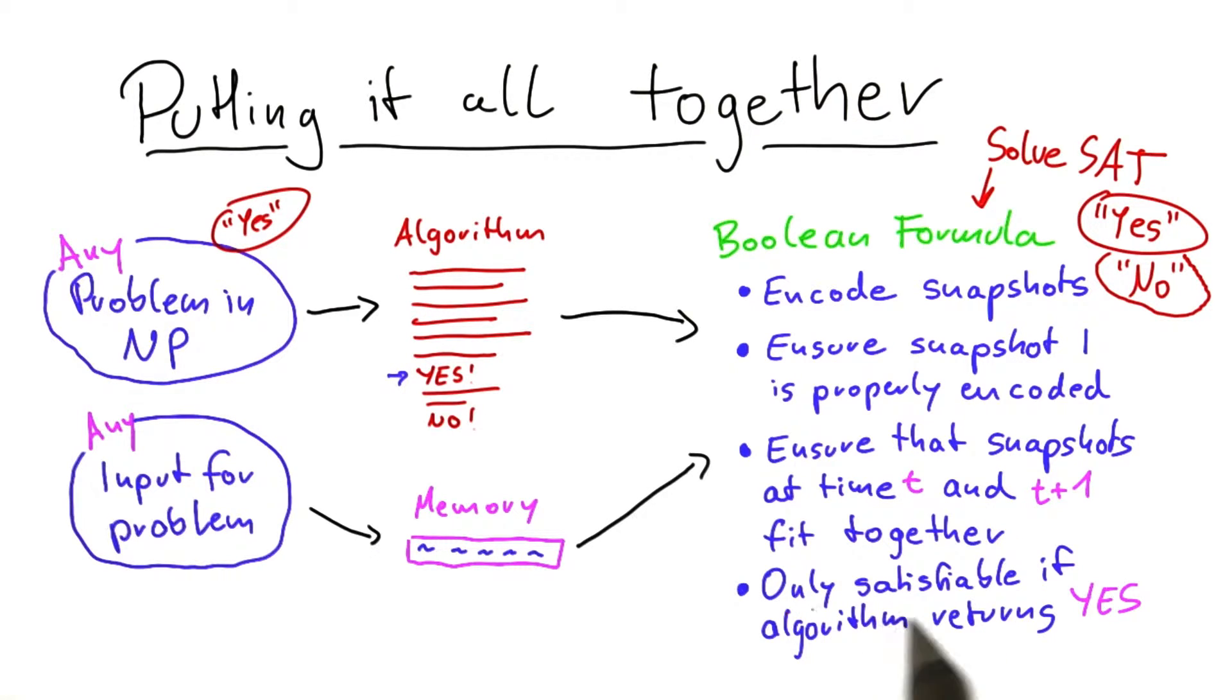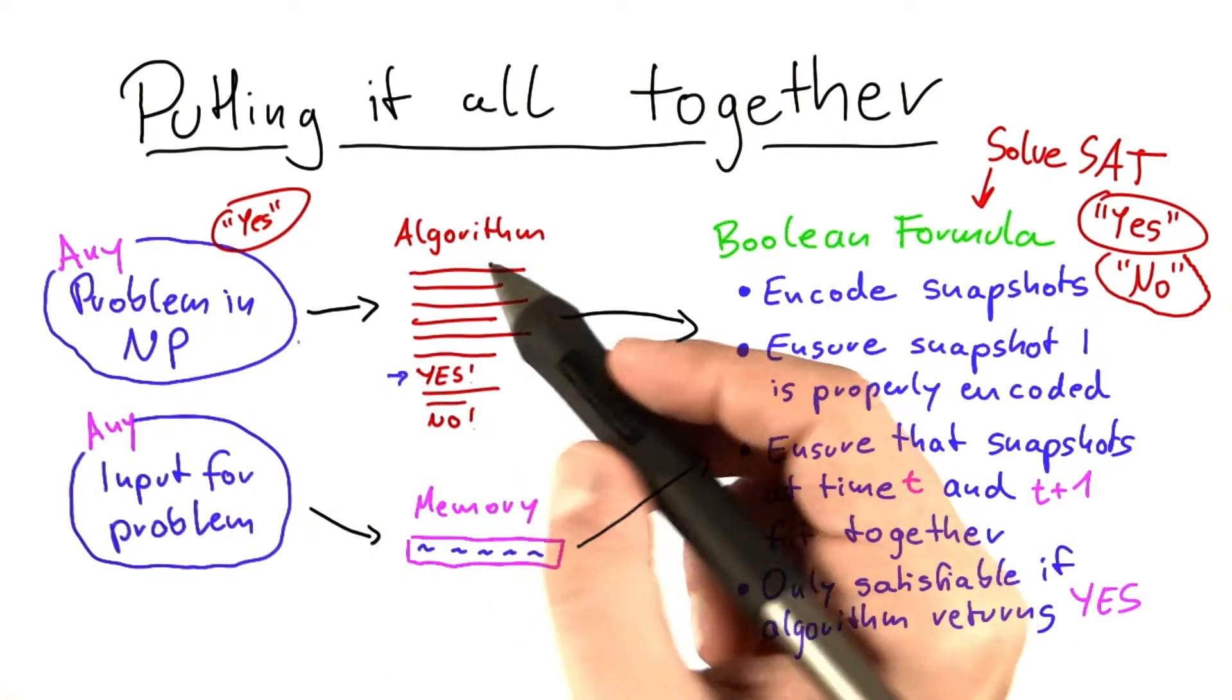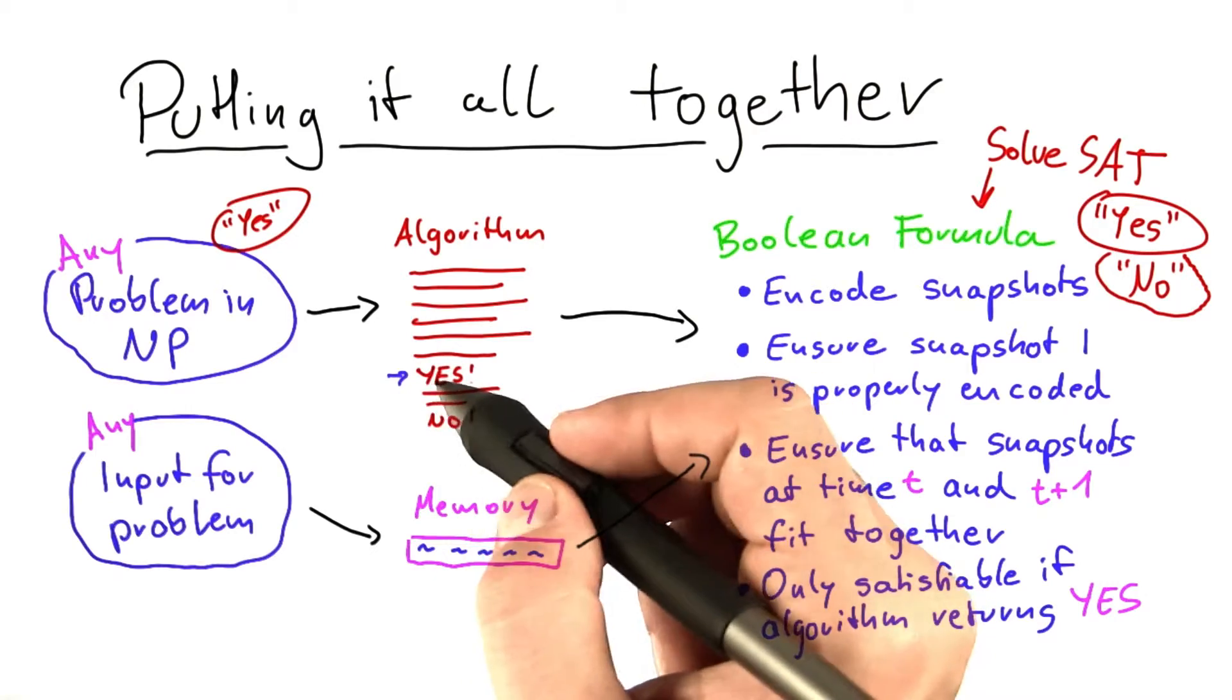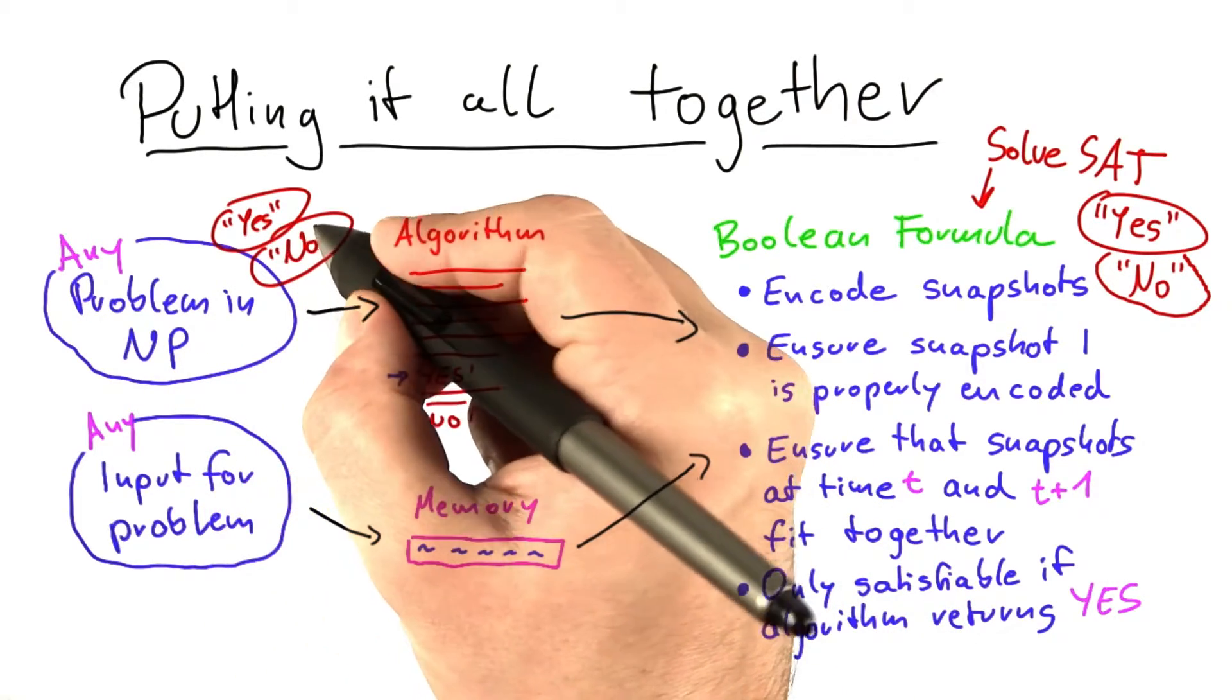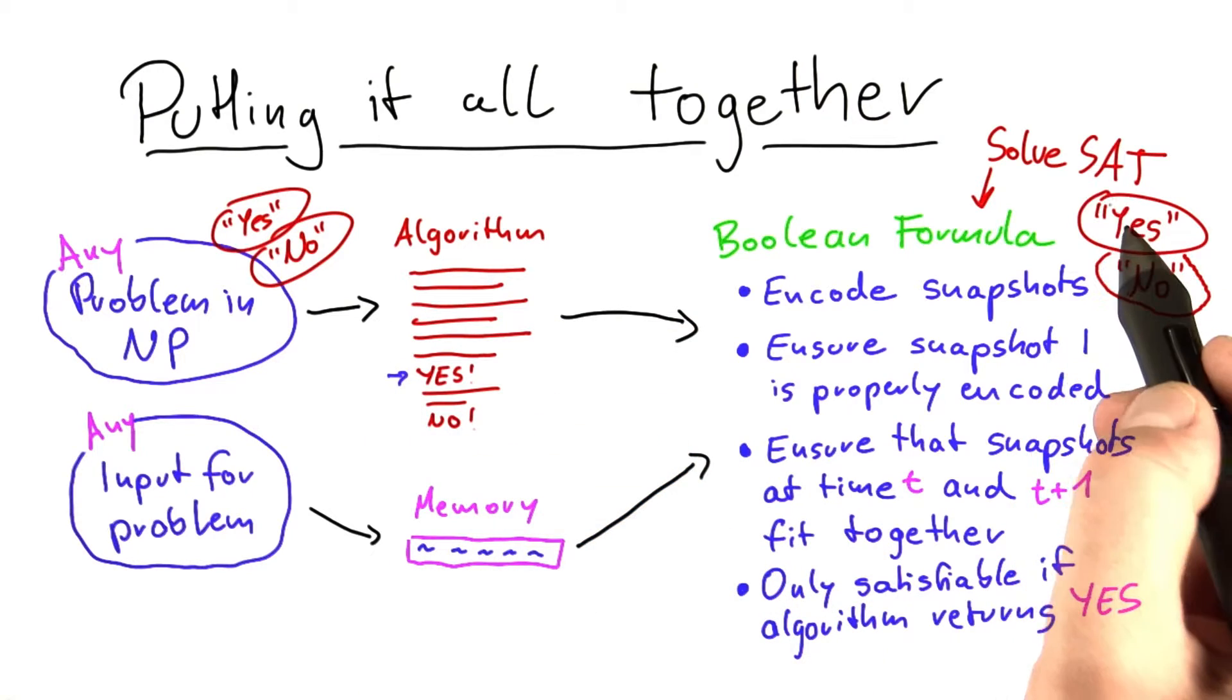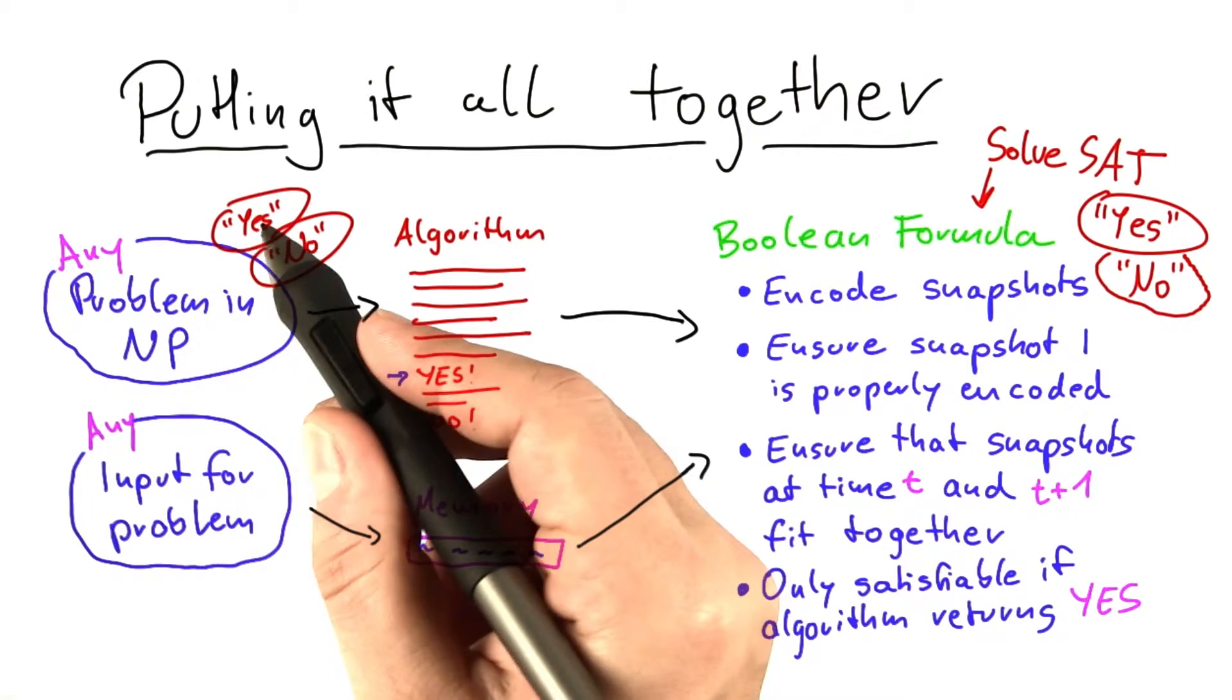The only reason why there could be no satisfying assignment is if the algorithm does not return yes at a certain point in time. And since this algorithm solves this problem here, if it cannot reach yes, then this means that this decision problem here is also a no. So satisfiability only if this problem given this input here is a yes.